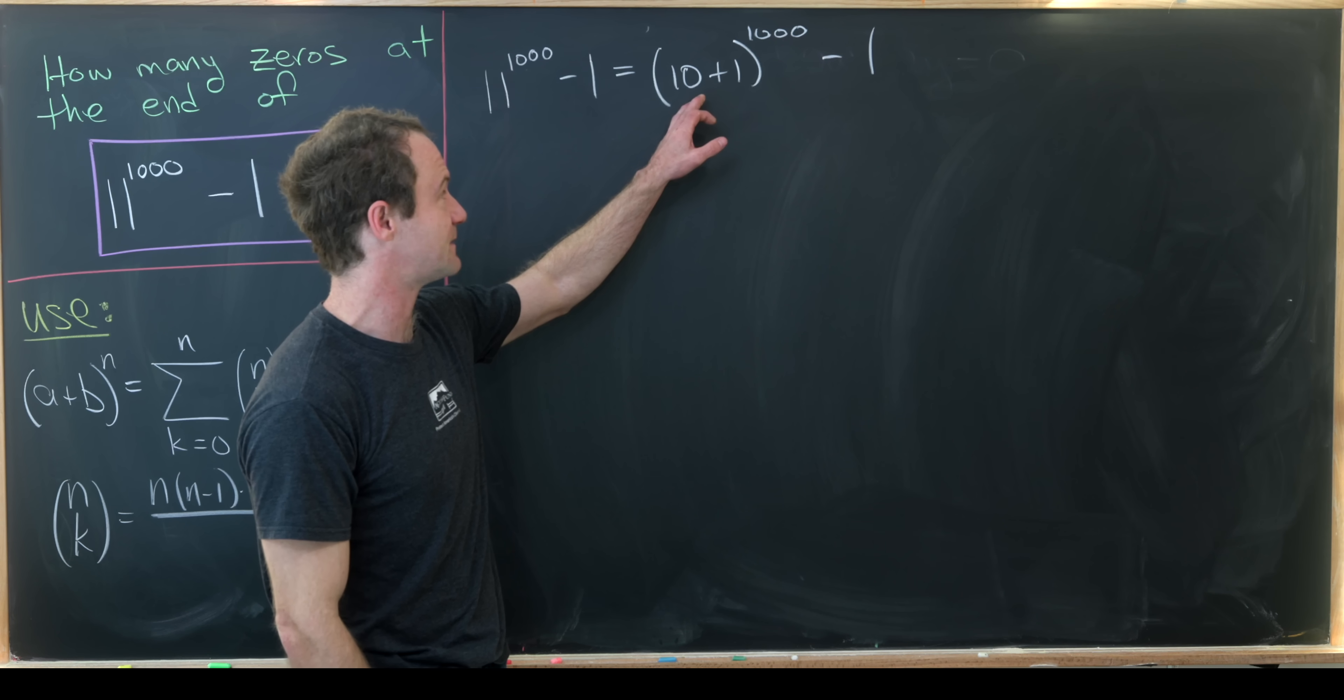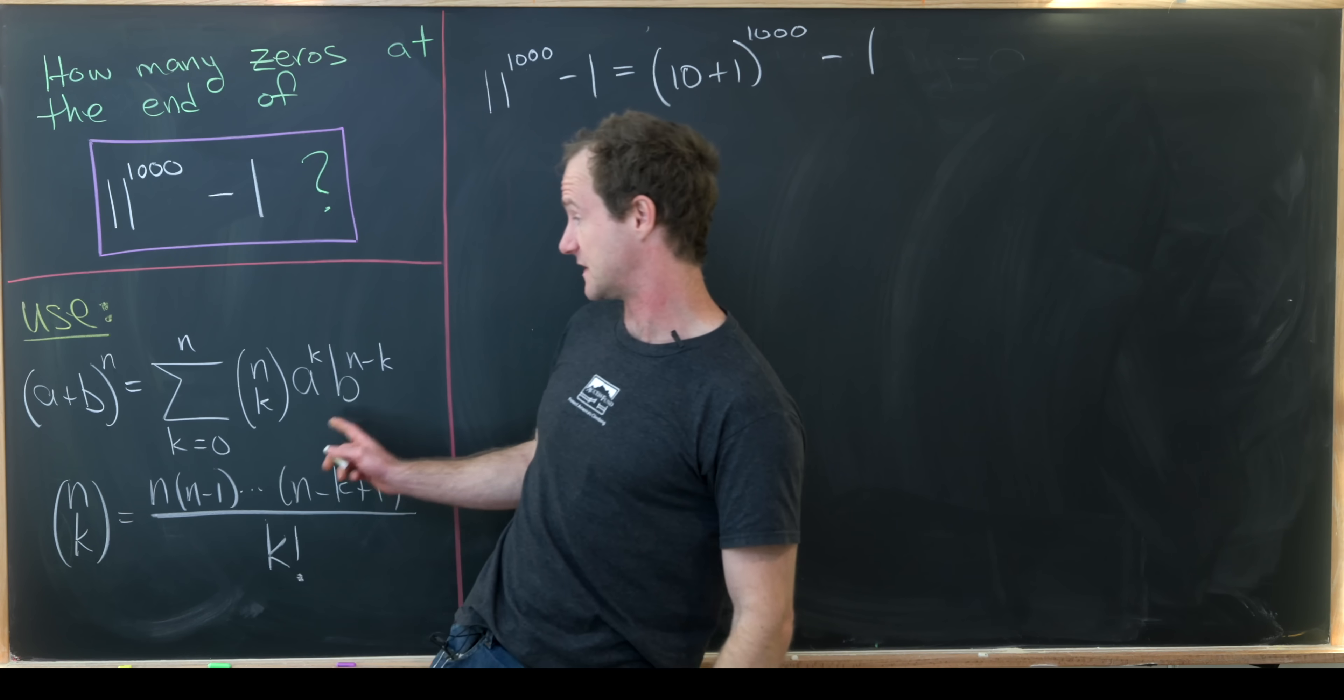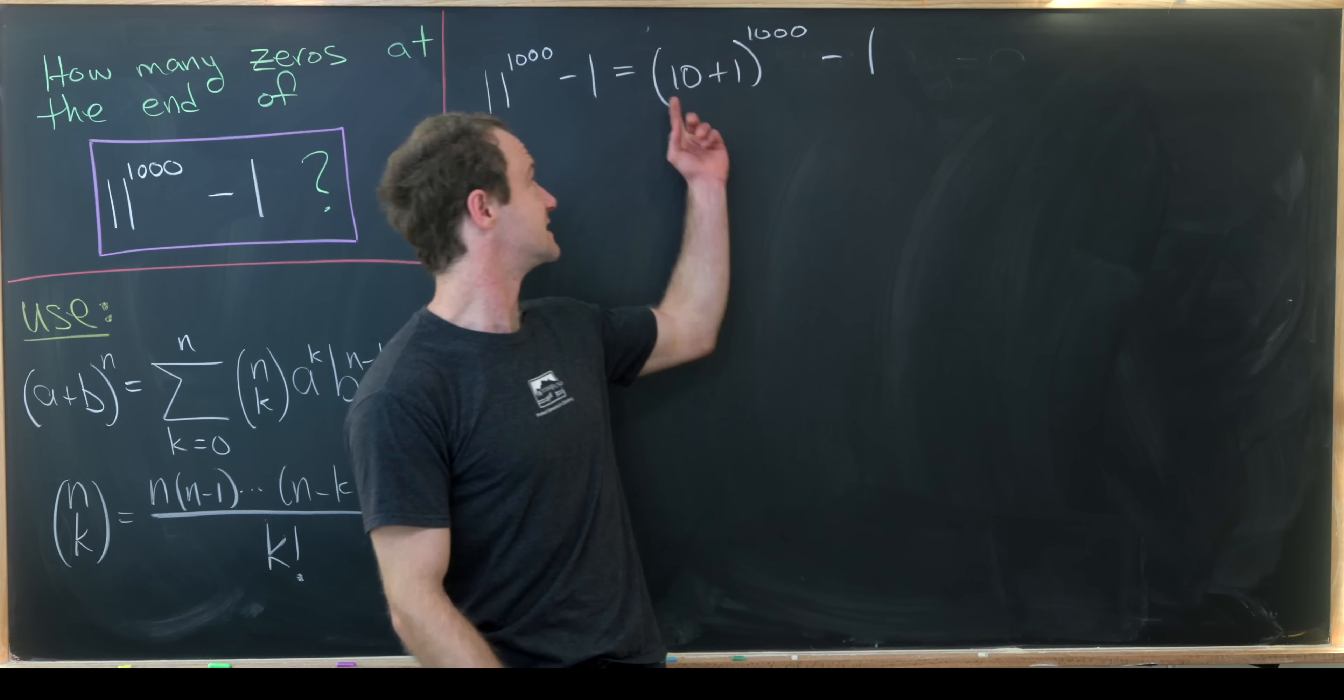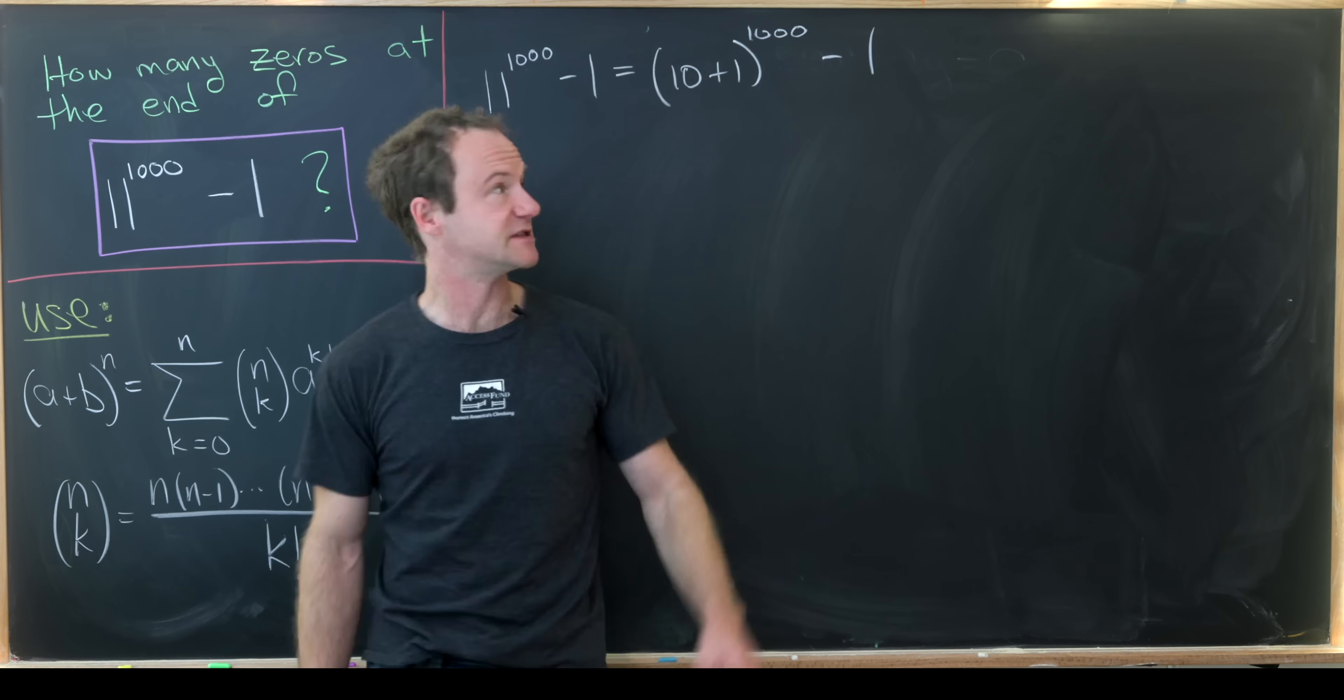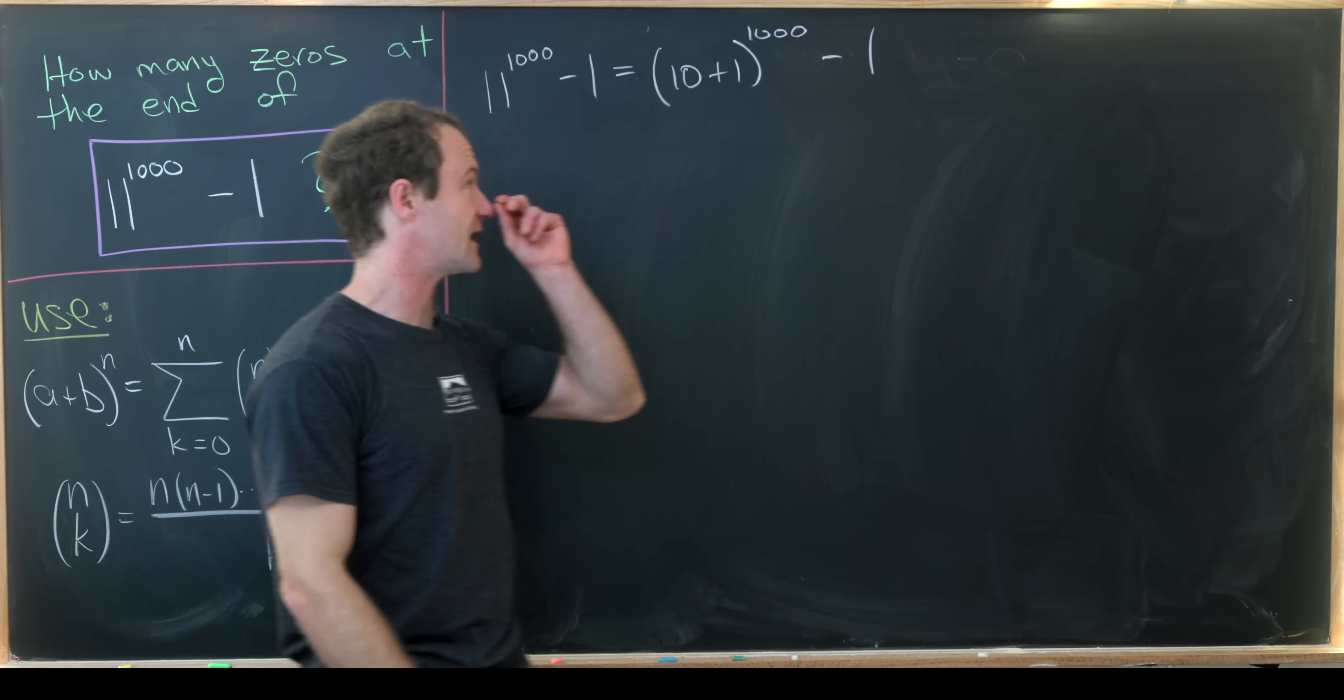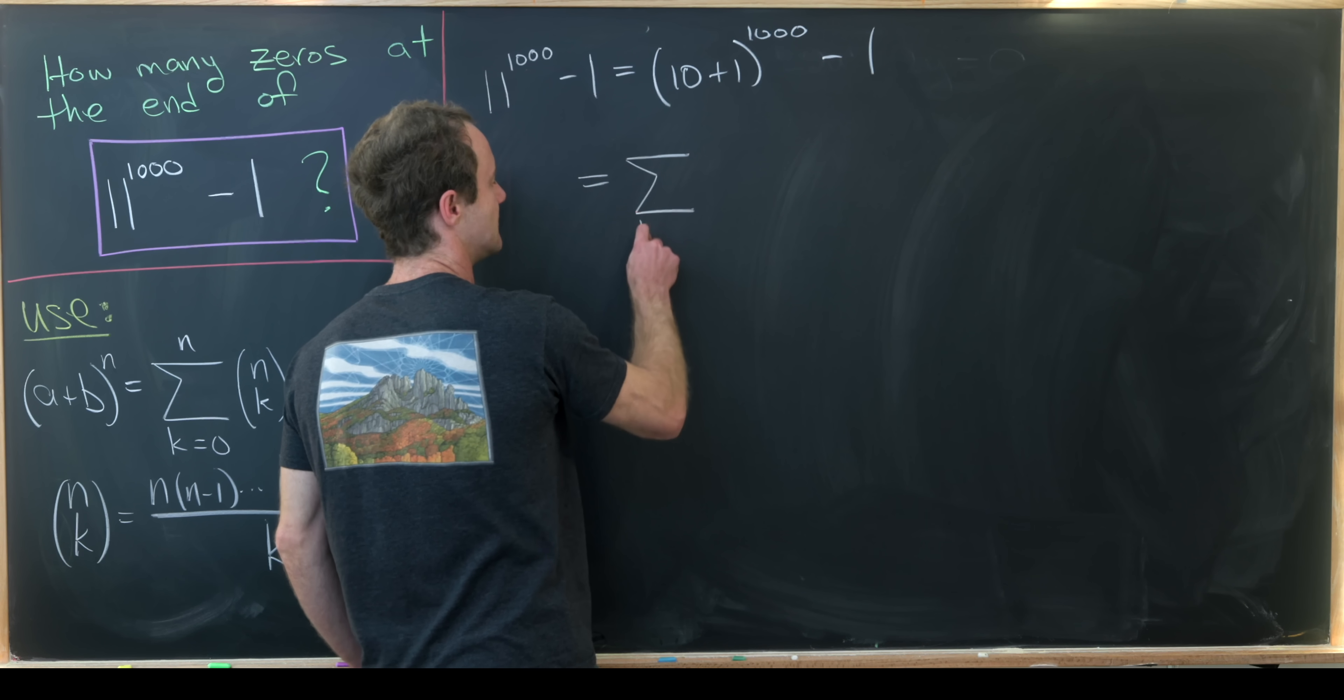And now we'll expand 10 plus 1 to the thousand as a binomial with this binomial expansion. So the role of a is being played by 10, the role of b is being played by 1, and the role of n is being played by 1,000.